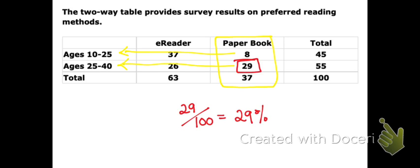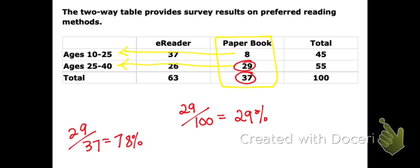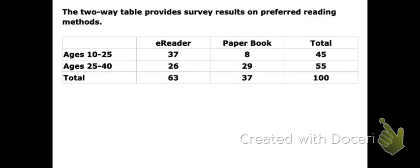If you want to ask of those that prefer paper books, how many are between the ages of 25 and 40 — so of that total of 37, how many are between ages 25 and 40? That's 29 out of 37, which is about 78%. When calculating a percentage from a two-way frequency table, make sure you know whether the question asks of the total people surveyed or of those in a specific category. And that's just a few of the questions you might get and some valuable information you can pull from a two-way frequency table.